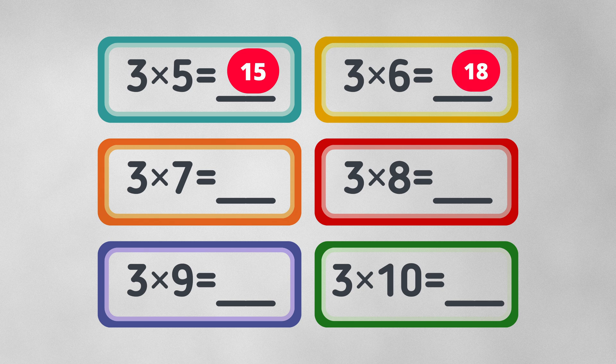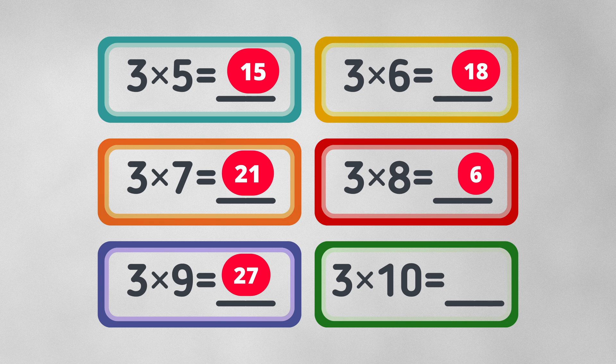3 times 7 equals 21. 3 times 8 equals 24. 3 times 9 equals 27. 3 times 10 equals 30.